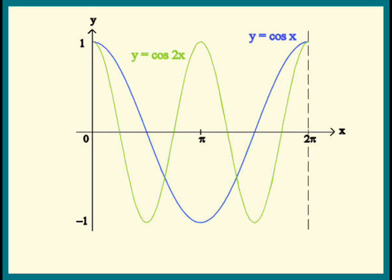Notice the new period equals 2 pi divided by the green 2, the 2 in the cosine 2x.